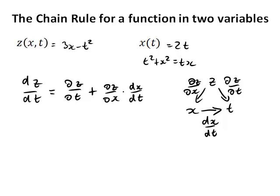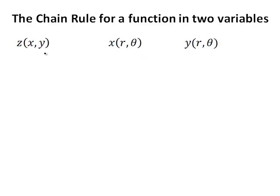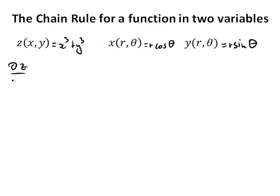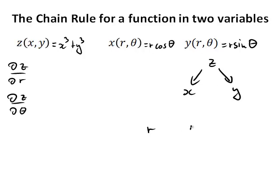Let's have a look at one more example. z is a function in x and y, x is a function in r and θ, and so is y. For instance, z(x,y) = x³ + y³, x(r,θ) = r cos θ, and y(r,θ) = r sin θ. If we want to find ∂z/∂r and ∂z/∂θ, we draw the tree diagram starting with z. z comes in x and in y; x comes in r and in θ; and y comes in r and in θ — listing all variables where they belong.